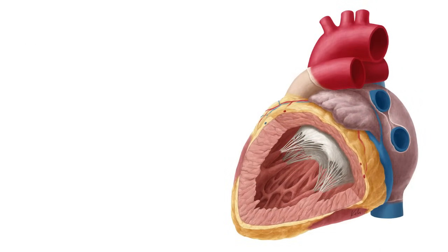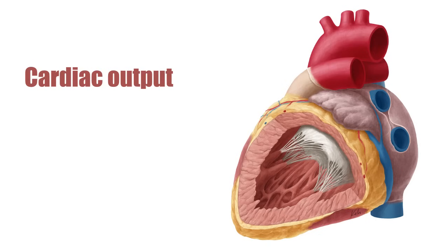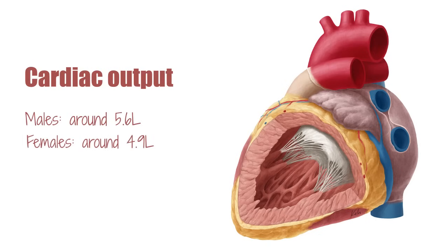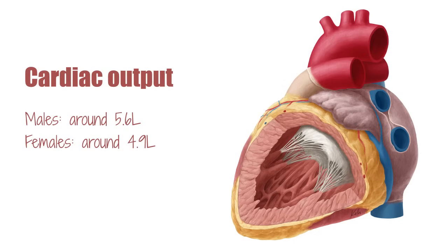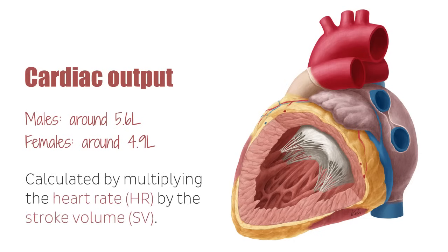The amount of blood in liters that is pumped out of the heart per minute is known as the cardiac output, which is around 5.6 liters in males and 4.9 liters in females. It can be calculated by multiplying the heart rate, which is the number of beats per minute, by the stroke volume, which is the amount of blood that collects in the ventricles when they are at full capacity and about to contract. The cardiac output varies depending on whether the person is exercising or resting.